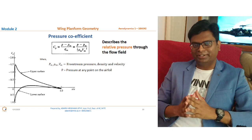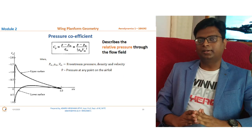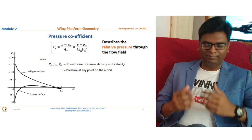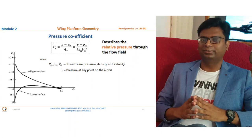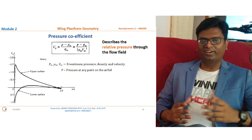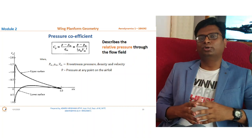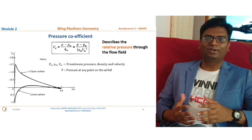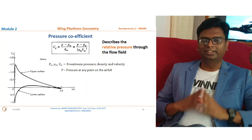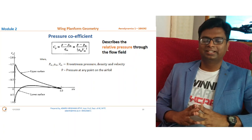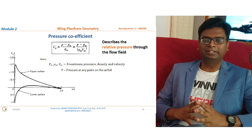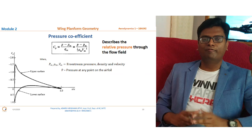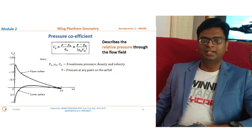This pressure coefficient equation is applicable only for low Mach numbers — that is, only for incompressible flow. In a compressible flow, the density varies at each point, whereas in an incompressible flow the density remains constant throughout. The moment compressibility comes into the picture, we must consider the Prandtl-Glauert correction, which tells us that the coefficient of pressure varies with Mach number.